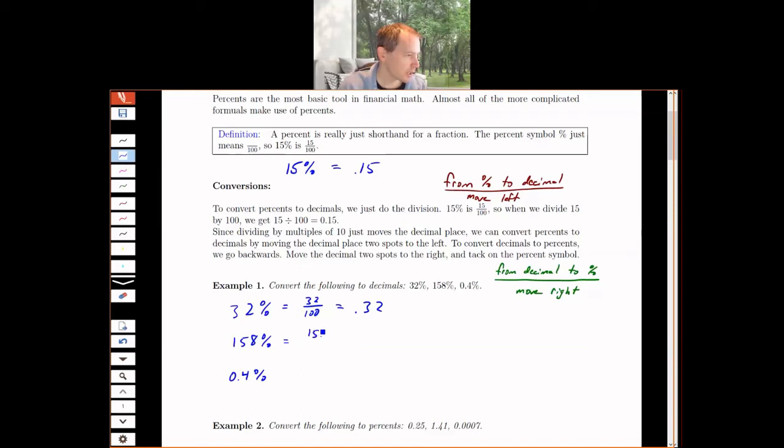For 158 percent, this is 158 over 100. Again, I just move the decimal place left two places, one, two, so I get 1.58.